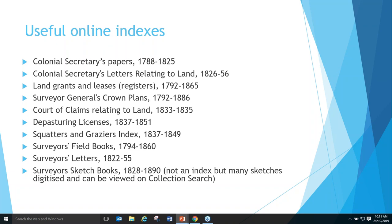Land grants and leases 1792 to 1865 — handy if you've got someone who did have a land grant and we'll have a look at those later. There's also the index to the Crown Plans — the earliest plans and drawings and maps of the NSW colony, where surveyors went out measuring up land, recording observations, drawing rivers, coastlines, and where people's farms were. The Court of Claims Records is another useful index and we'll look at that and Depasturing Licences a bit later in the talk.